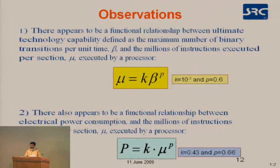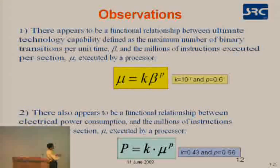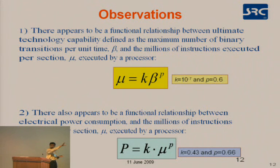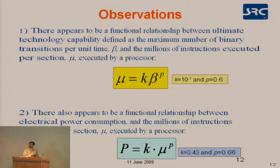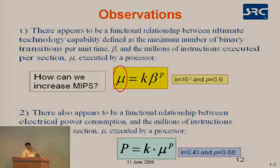There is a functional relationship between the technology capability defined and the maximum number of binary transitions. MIPS is the technology metric from the top; binary transitions are what you get from the bottom up. There seem to be a good relation between both, and a similar functional relationship exists for power. The key challenge is to increase MIPS without necessarily increasing power.